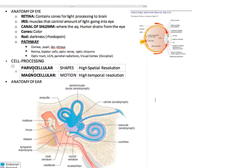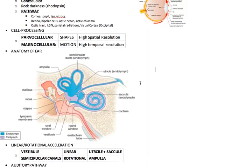Cell processing. Two types of cells have different things they perceive. Parvocellular cells will look for shapes at a high spatial resolution, and magnocellular cells will find motion at a high temporal resolution.